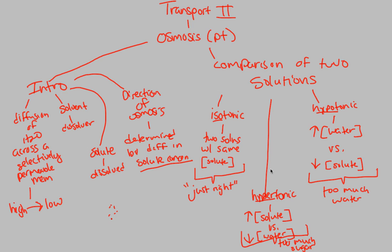In summary: osmosis is passive transport, involving no energy because it uses concentration gradients going from high to low. Solvent and solute are key terms — water is the universal solvent; solutes get dissolved in water. The direction of osmosis is determined by the difference in solute concentration. In a hypertonic environment, water enters to dilute it; in a hypotonic environment, water exits. That is osmosis as an introduction.